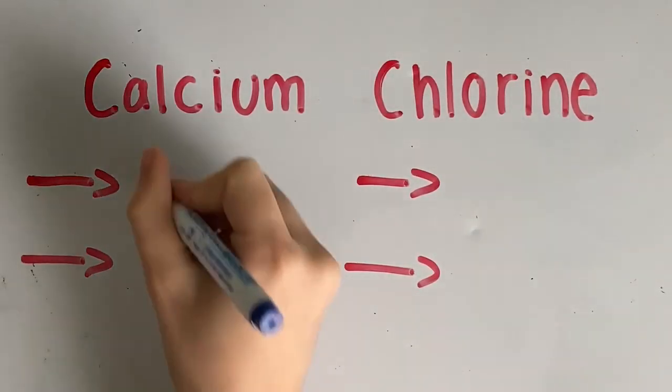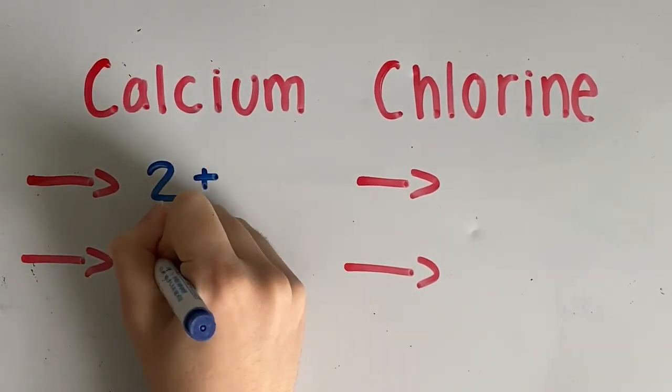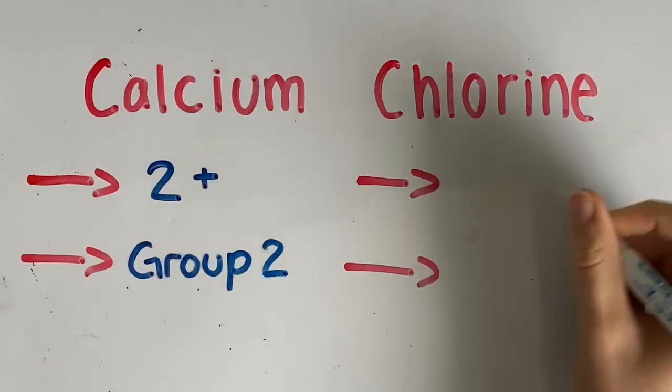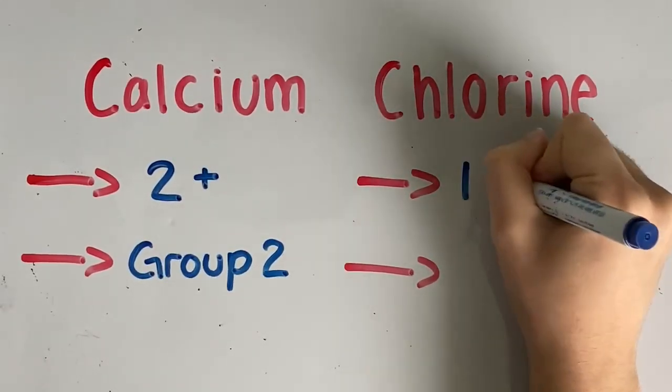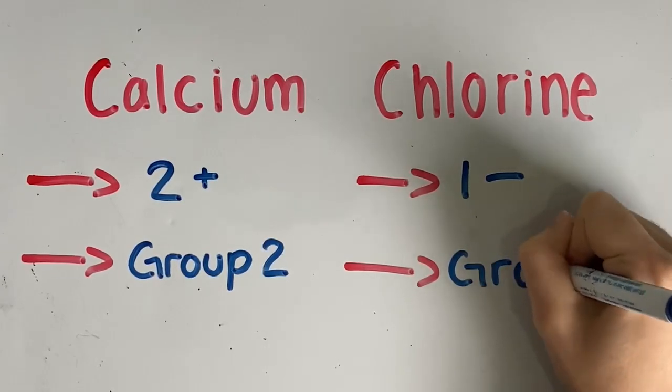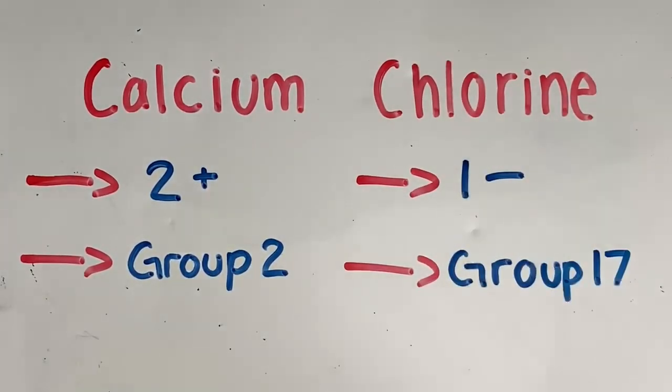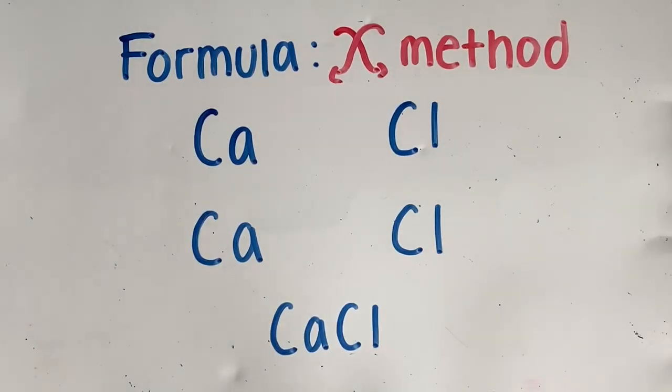Here is an example of an ionic compound. Calcium, a metal cation, has a charge of positive two. We know this because it's in group two of the periodic table. Chlorine, a non-metal anion, has a charge of negative one. We know this because it's found in group 17 of the periodic table. This means that chlorine has seven valence electrons and needs to gain one electron to complete its valence shell.